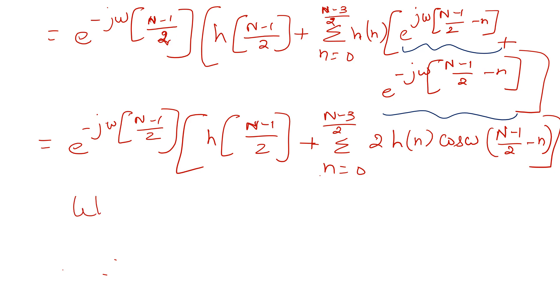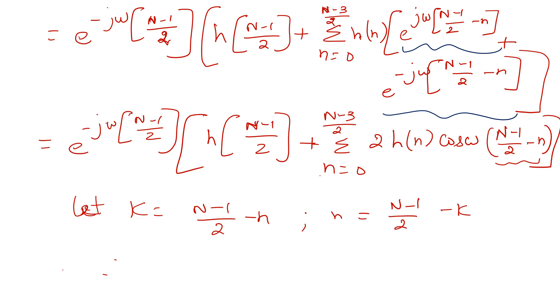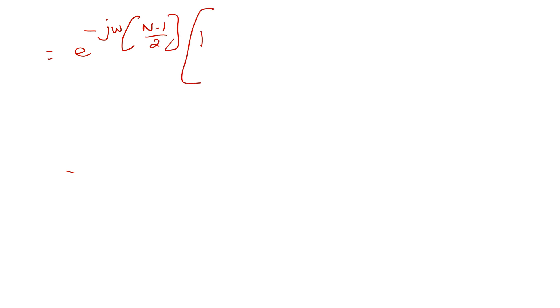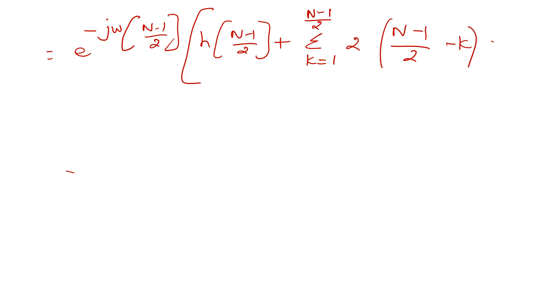Here let us take the value of k as (N-1)/2 minus n, since we are getting this in the angle of the cosine. Therefore I can rewrite n as (N-1)/2 minus k. With respect to the limits: when n equals 0, k equals (N-1)/2; and when n equals (N-3)/2 (the upper limit), k equals 1. Now rewriting the expression: e^(-jω(N-1)/2) into h((N-1)/2) plus summation k equal to 1 to (N-1)/2 of 2 times h((N-1)/2 - k) times cos(ωk).